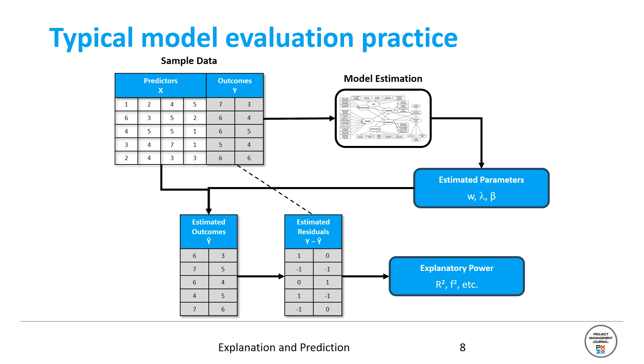Let's say we have some sample data with some predictors and some outcomes, five observations for illustration. We would then estimate a model like this one shown on the slide. This could be a structural equation model, a simple regression model, could be an ANOVA, you name it. We estimate the parameters. In the case of the structural equation model, this could be indicator weights, indicator loadings and the betas, meaning the path coefficients. Using these we get the estimated outcomes for the entire dataset, our five observations. And with this input, we can compare the estimated outcomes with the actual true outcomes, with the y. These are the estimated residuals. Using these estimated residuals, we can then express a model's explanatory power, like the R-square, the effect size F-square and so on.